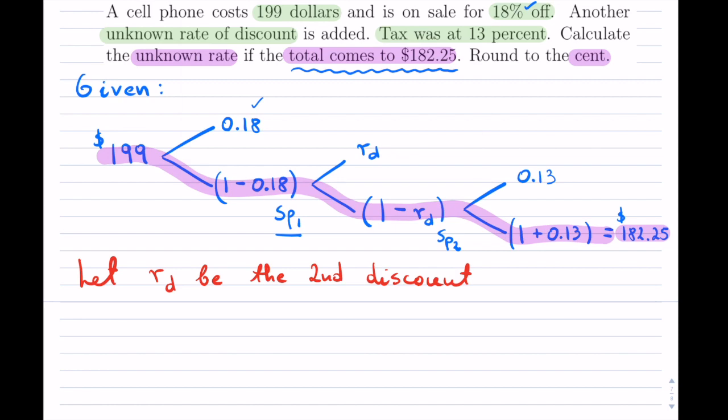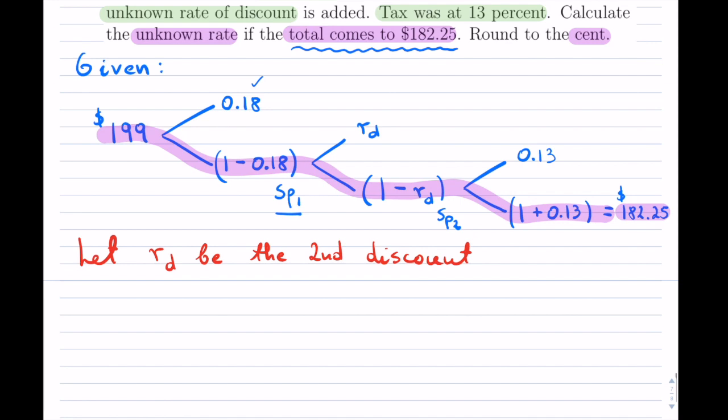Once you do that, you can create your equation. So I start from the back. So I know that my total is 182.25. And that equals to, and now I just start multiplying all the different factors that I have here. So that is with the taxes multiplied by 1 minus Rd, and then multiplied by 1 minus 0.18. Notice I'm just walking through this path all the way. And then finally times, this is actually 199. So that's my equation.